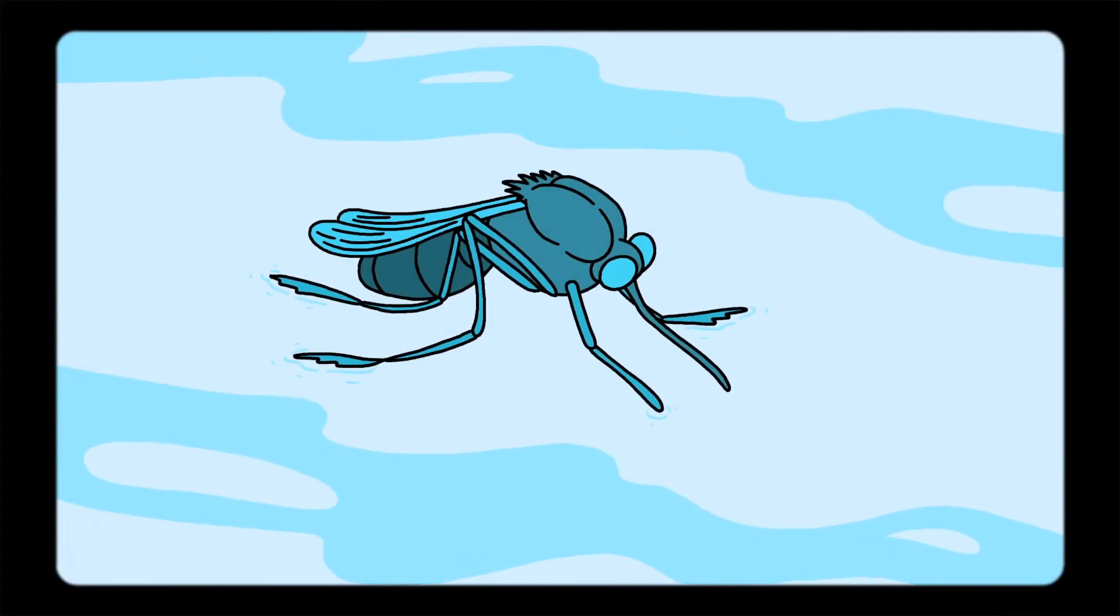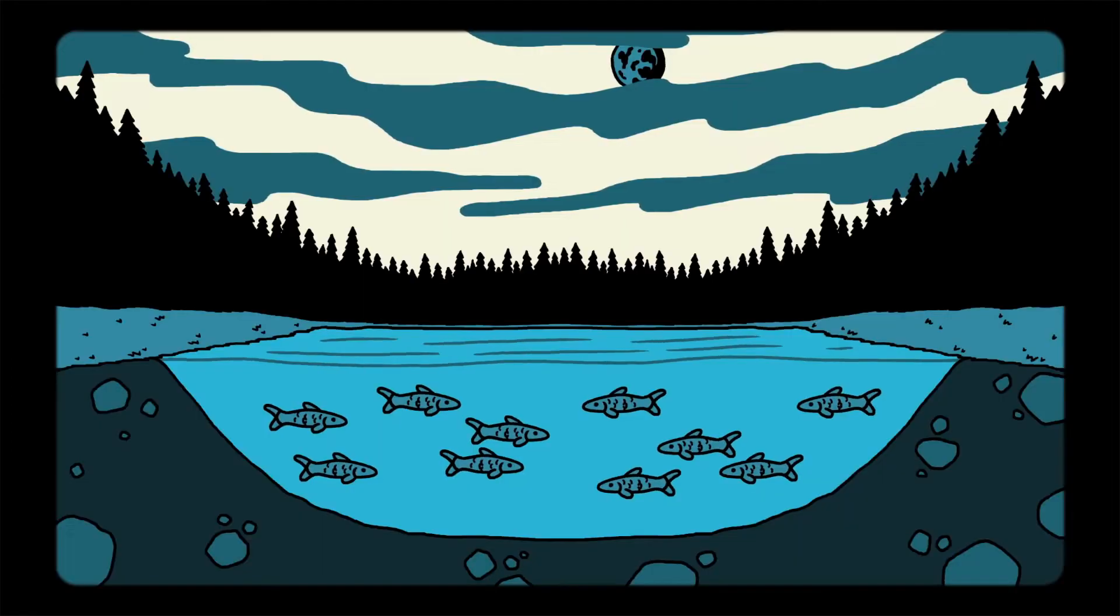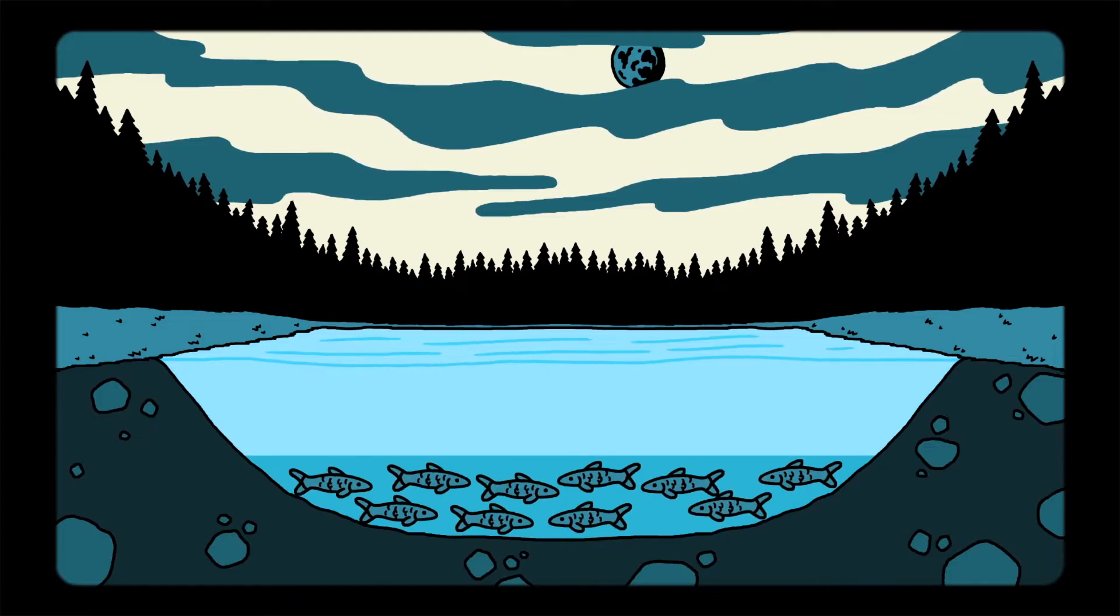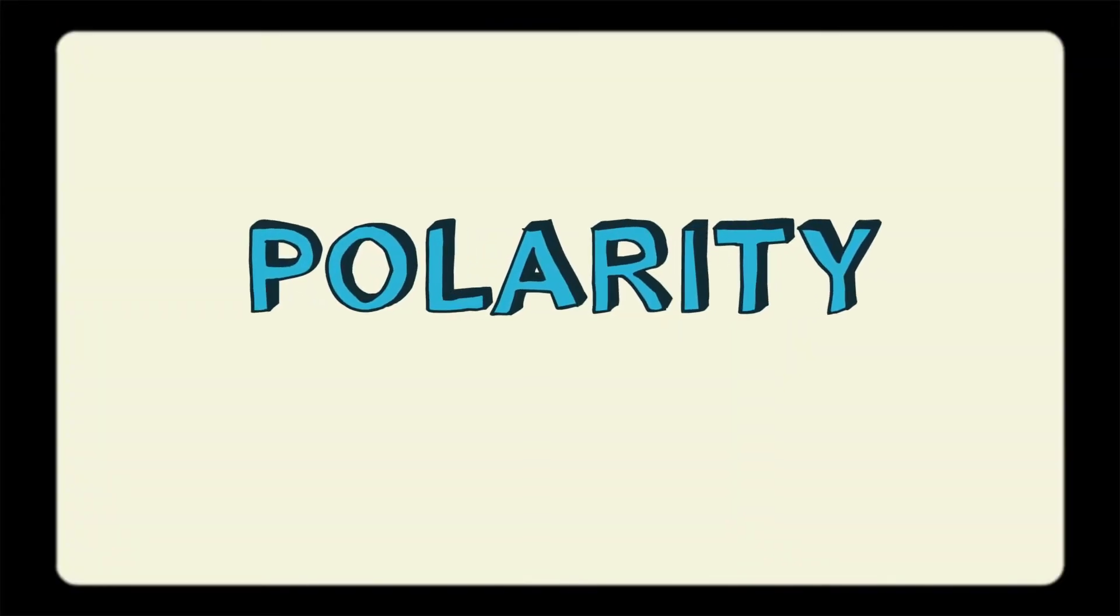How come some insects are able to walk on the surface of a pond, but you quickly sink to the bottom when you try to walk on water? And why do lakes freeze from the top down in winter? In a word, the answer to all of these questions is polarity.